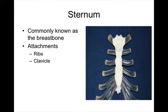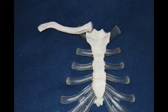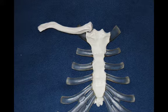The sternum is commonly known as the breastbone. You can see the ribs attaching via cartilage called costal cartilage. It also attaches to the clavicle at the lateral part of the superior aspect of the sternum, just lateral to the jugular notch. In this case it's the right clavicle — we of course have a right and a left — commonly known as the collarbone.